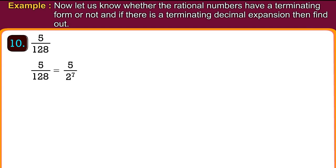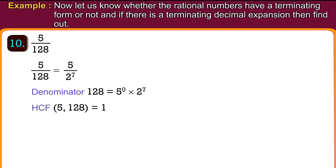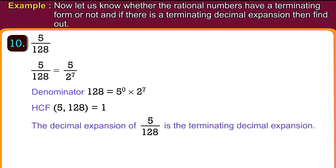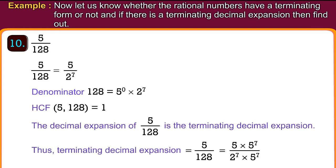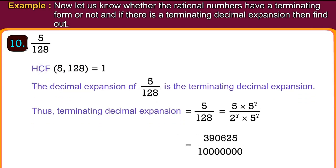Number 10: 5 upon 128. 5 upon 128 equals 5 upon 2 raised to 7. The denominator 128 equals 5 raised to 0 into 2 raised to 7. The highest common factor of 5 and 128 is 1. So the decimal expansion of 5 upon 128 is the terminating decimal expansion. Thus, 5 upon 128 equals 5 into 5 raised to 7 upon 2 raised to 7 into 5 raised to 7, equals 3,90,625 upon 1 crore, equals 0.0390625.